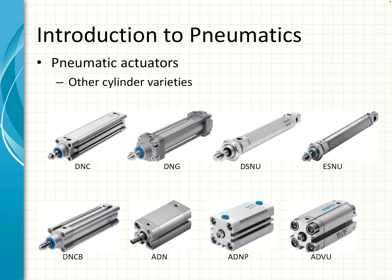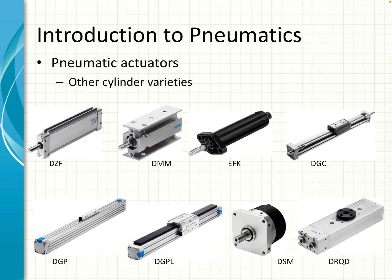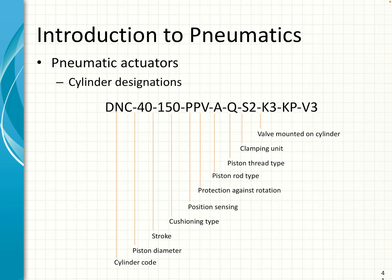These are just a number of examples of cylinders from the Festo catalog. As you can see, they come in a variety of shapes and sizes. Festo uses a certain designation on the cylinder to indicate all the information about it — the type, the piston diameter, the stroke, whether it has cushioning, the type of connections, and so on.